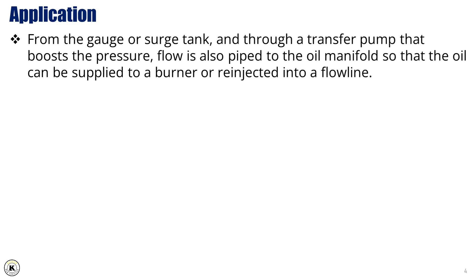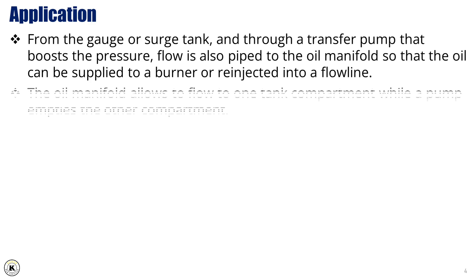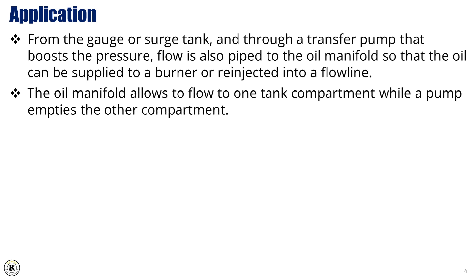From the gauge or surge tank, and through a transfer pump that boosts the pressure, flow is also piped to the oil manifold, so that the oil can be supplied to a burner or re-injected into a flow line. The oil manifold allows flow to one tank compartment, while a pump empties the other compartment.